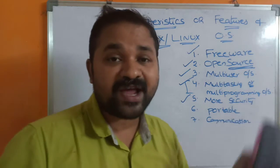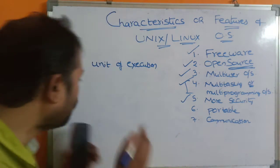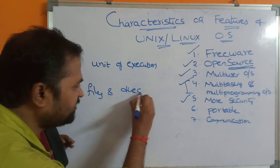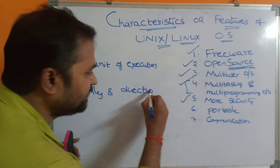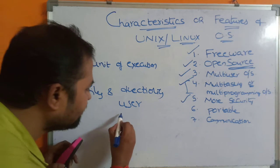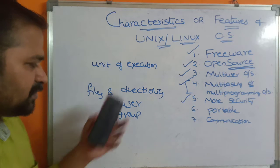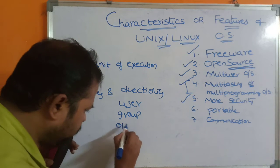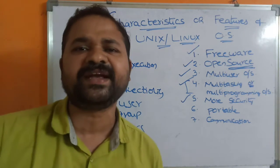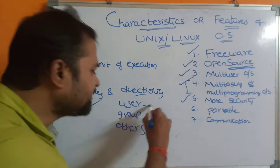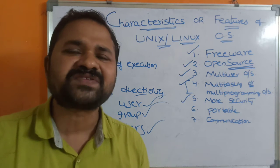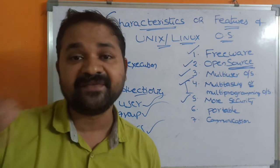The next feature is more security. Unix or Linux provides more security to files and folders. We have three types of users: at user level, at group level — where a group is a set of users — and at other level. We can provide permissions and security to our files and directories at all three levels. Unix or Linux is more secure compared to Windows, Macintosh, and Solaris.